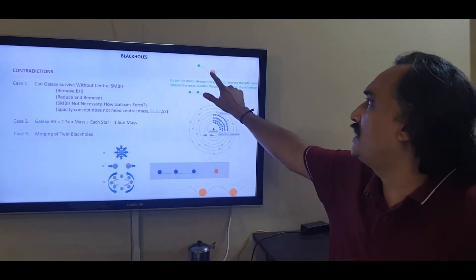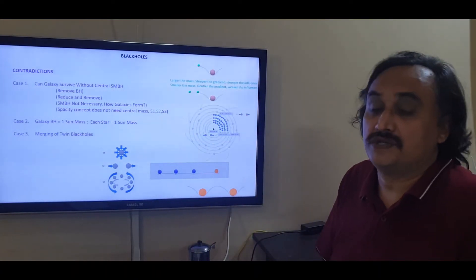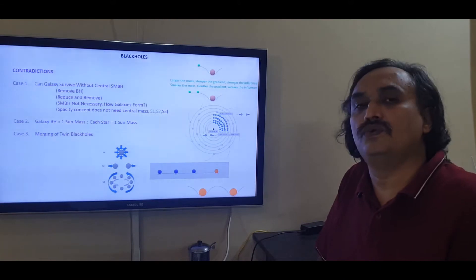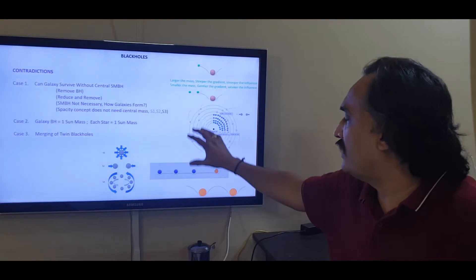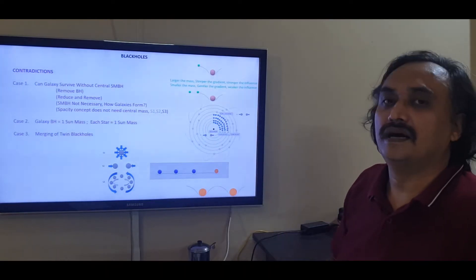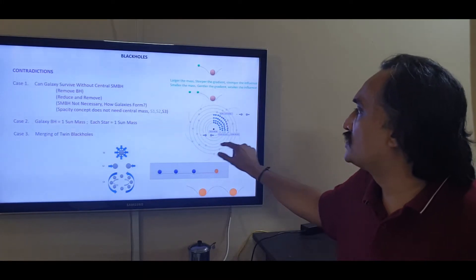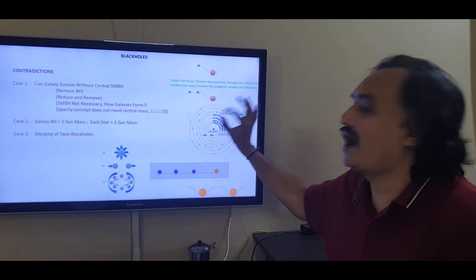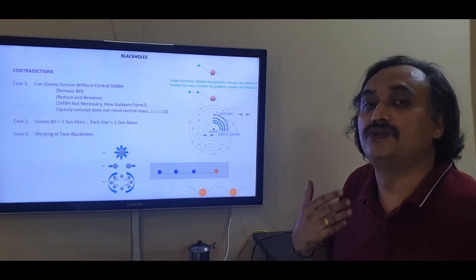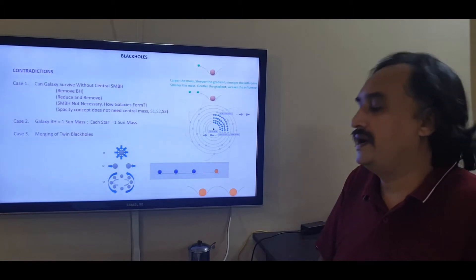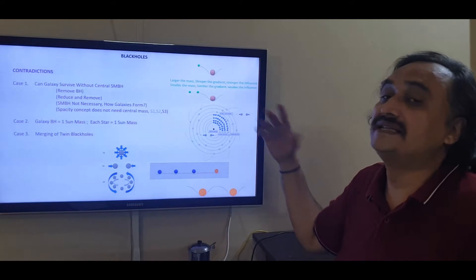So it looks so commonsensical that if this is the mass which is holding this mass in position, you take away the supermassive black hole from the center. This mass, there is no one to guide it, there is no one to have a hold on it. It is free to move. The stars would feel free to fly away in a direction which is tangential to wherever they are, and the whole galaxy would disintegrate.